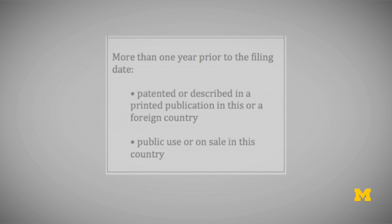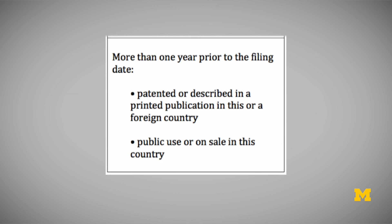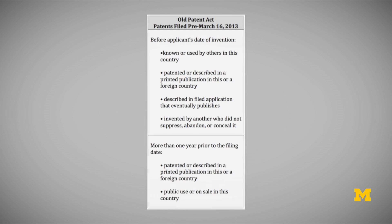There's another category of prior art under the Old Patent Act that covered information created more than one year prior to the applicant's filing date. This included information that was patented or described in a printed publication in this or a foreign country, or that caused the information to be placed in public use or on sale in this country. Putting these two categories together — information that came into existence before the applicant's date of invention, and information created more than one year before the applicant's filing date — you can see how the grace period worked.